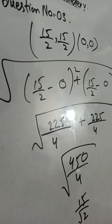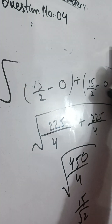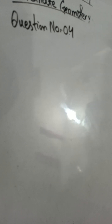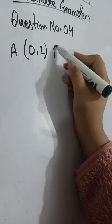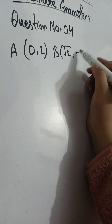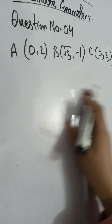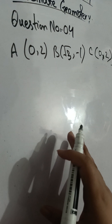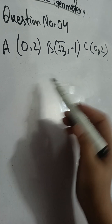Now we will go to question number four, part one. There are three points: point A is (0, 2), point B is (root 3, -1), and point C is (0, -2). We have to explain the triangle — whether all these points form a triangle or not, and what type it is. Simply you have to find the distances between the points.